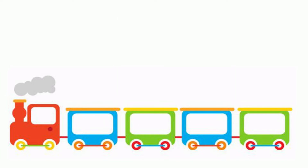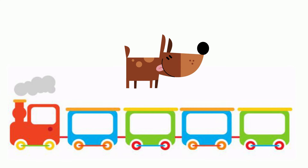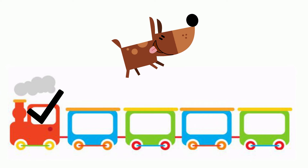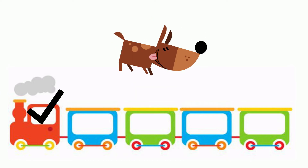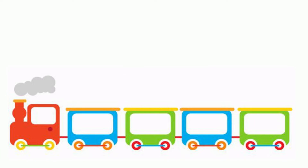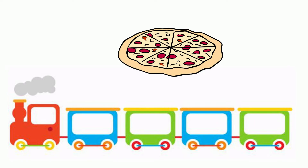Let's try dog. Count the syllables in the word dog. Dog. There is one syllable in the word dog. Now let's try pizza — say it slowly and tick the syllables. Pizza. There are two syllables in the word pizza.